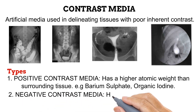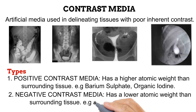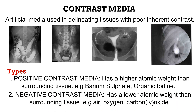As for the negative contrast media, its atomic weight is lower than that of the tissue it is introduced into. This means that it would absorb fewer photons and would produce greater radiographic density than the surrounding tissue. Examples include gases like air, oxygen, and carbon dioxide.